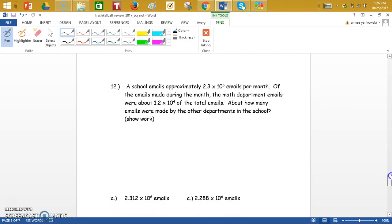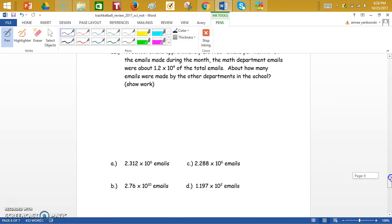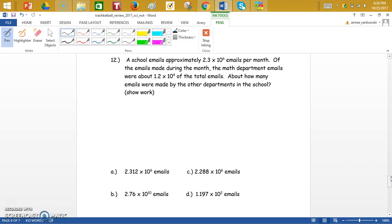Take a look at number 12. So, a school emails approximately 2.3 times 10 to the 6 emails per month. Of the emails made during the month, the math department emails were 1.2 times 10 to the 4th total emails. About how many emails were made by the other departments at the school? So, if you know your total is 2.3 times 10 to the 6th, and the math department sent out this many emails, if we go ahead and subtract those numbers, we'll find out how many other emails were sent.